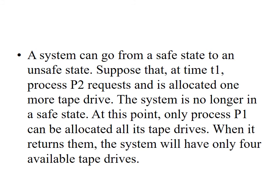Given the concept of safe state, we can define avoidance algorithms that ensure that the system will never deadlock. The idea is simply to ensure that the system will always remain in a safe state. Initially the system is in a safe state. Whenever a process requests a resource that is currently available, the system must decide whether the resource can be allocated immediately or whether the process must wait. The request is granted only if the allocation leaves the system in a safe state. In this schema, if a process requests a resource that is currently available, it may still have to wait. Thus resource utilization may be lower than it would otherwise be.